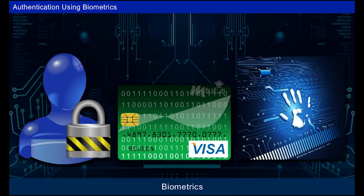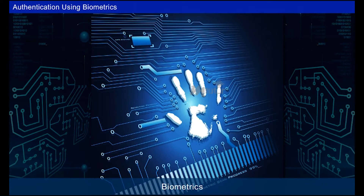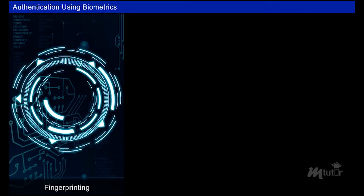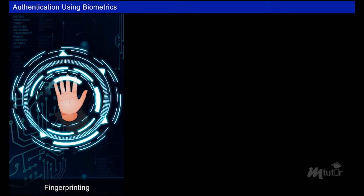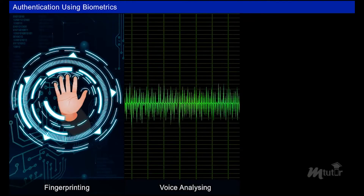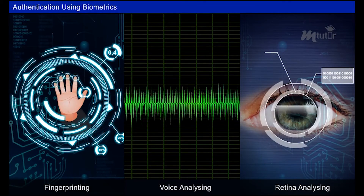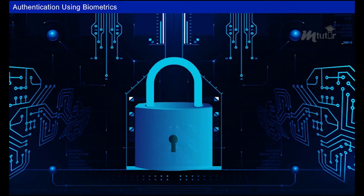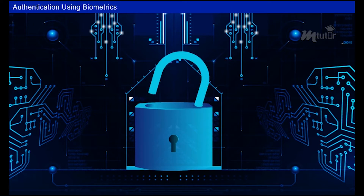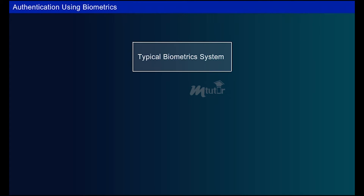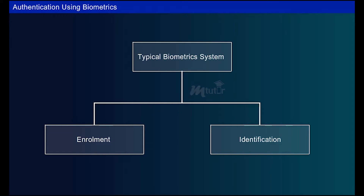The third type of user authentication is by measuring the physical characteristics of the user. This technology is called biometrics — for example, usage of fingerprints, voice analysis, and retina analysis. Similar to other types of authentication, a typical biometrics system also has two parts: enrollment and identification.